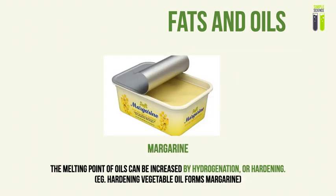In fats and oils, there's a substance called margarine, which is essentially an oil that has been hardened or hydrogenated through a process called hydrogenation. This basically adds an extra hydrogen atom to the carbon double bond to break it and make it only single bonds. That's how you increase the melting point of oils and produce a substance called margarine.